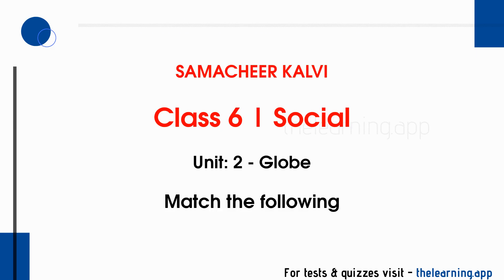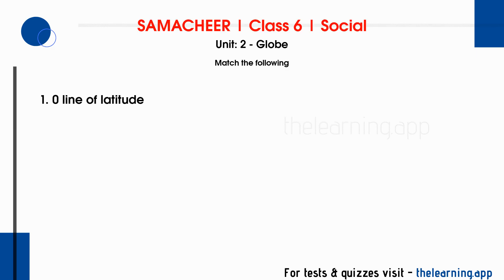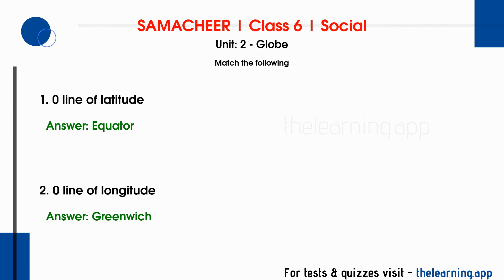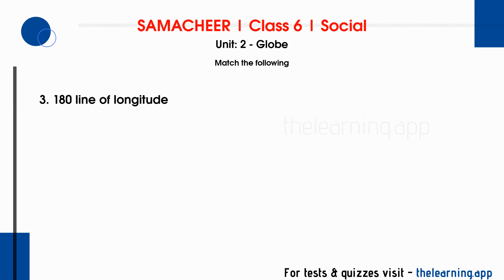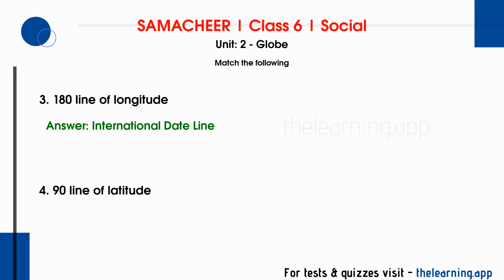Match the following. Question 1: Zero line of latitude — Correct answer is Equator. Question 2: Zero line of longitude — Correct answer is Greenwich. Question 3: 180 line of longitude — Correct answer is International Date Line. Question 4: 90 line of latitude — Correct answer is Pole.